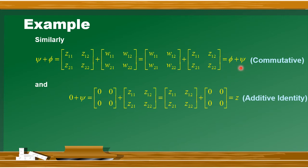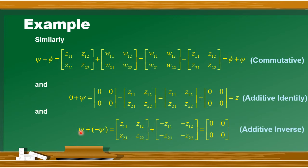Next property है additive identity. अगर इस psi vector के अंदर identity vector 0 add किया जाता है - जिसकी value [0, 0; 0, 0] है - इसको जब psi में add किया जाएगा तो result ultimately psi के ही equal आएगा. तो 0 को additive identity का नाम दिया जाएगा. Similarly additive inverse देखा जाए तो psi को negative psi में जब add किया जाएगा, negative sign with each element of the matrix, तो result [0, 0; 0, 0] आता है - additive identity. तो psi and negative psi are additive inverse of each other.